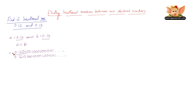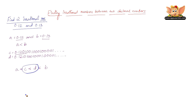Let us call these C and D respectively. Therefore, C and D are the two irrational numbers between A and B, such that A is less than C, C is less than D, and D is less than B. Therefore C and D are the two irrational numbers between 0.12 and 0.13.